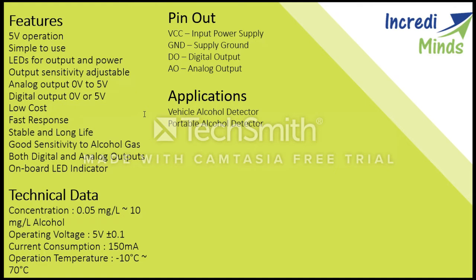Now we will look at its technical data. It has an alcohol concentration detection range of 0.05 mg per litre to 10 mg per litre. Operating voltage is 5 volts. Current consumption is 150 milliamperes. Operating temperature is 10°C to 70°C.